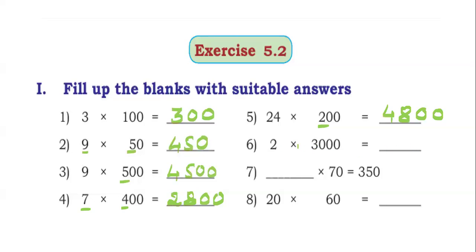2 into 3000. 2 into 3 is 6. Right hand side 3 zeros are there. 2 into 3,000 is 6,000.